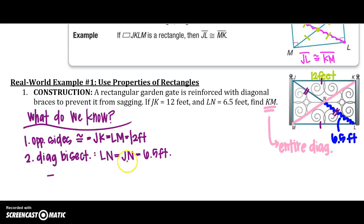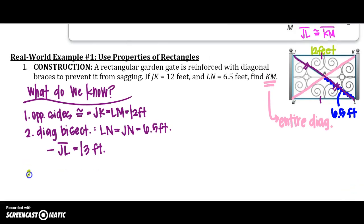And because I can say LN 6.5 plus NJ 6.5, the entire diagonal JL equals 13 feet, 6.5 plus 6.5. So this entire length equals 13 feet. So because of the theorem we just learned, 6.13...